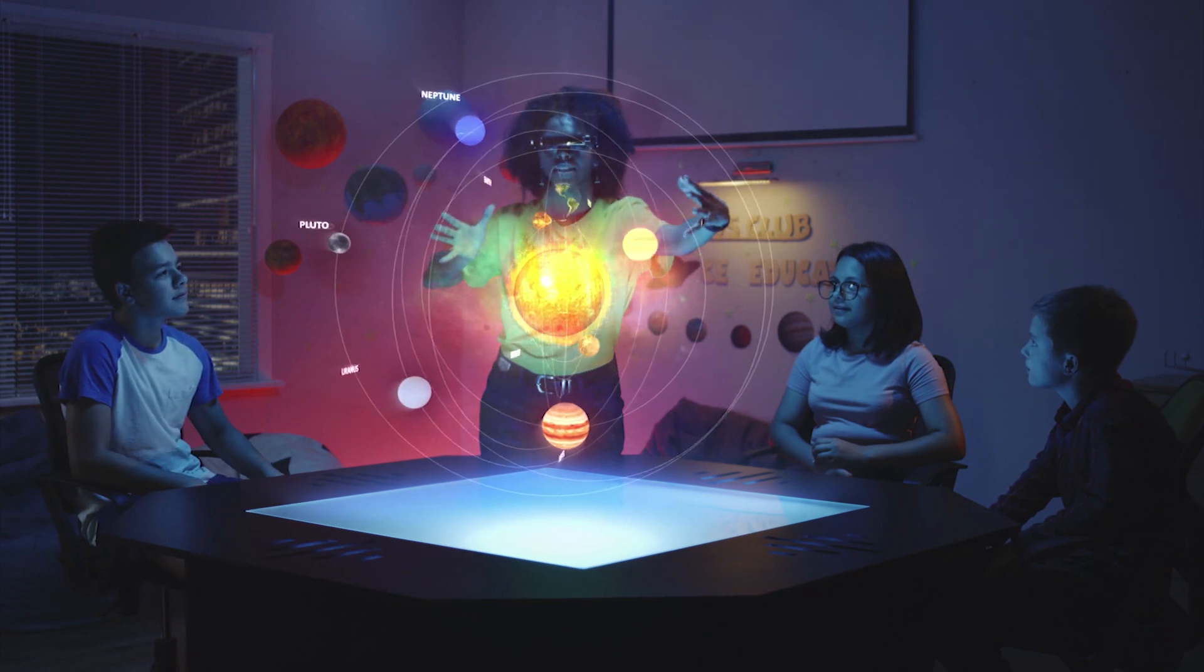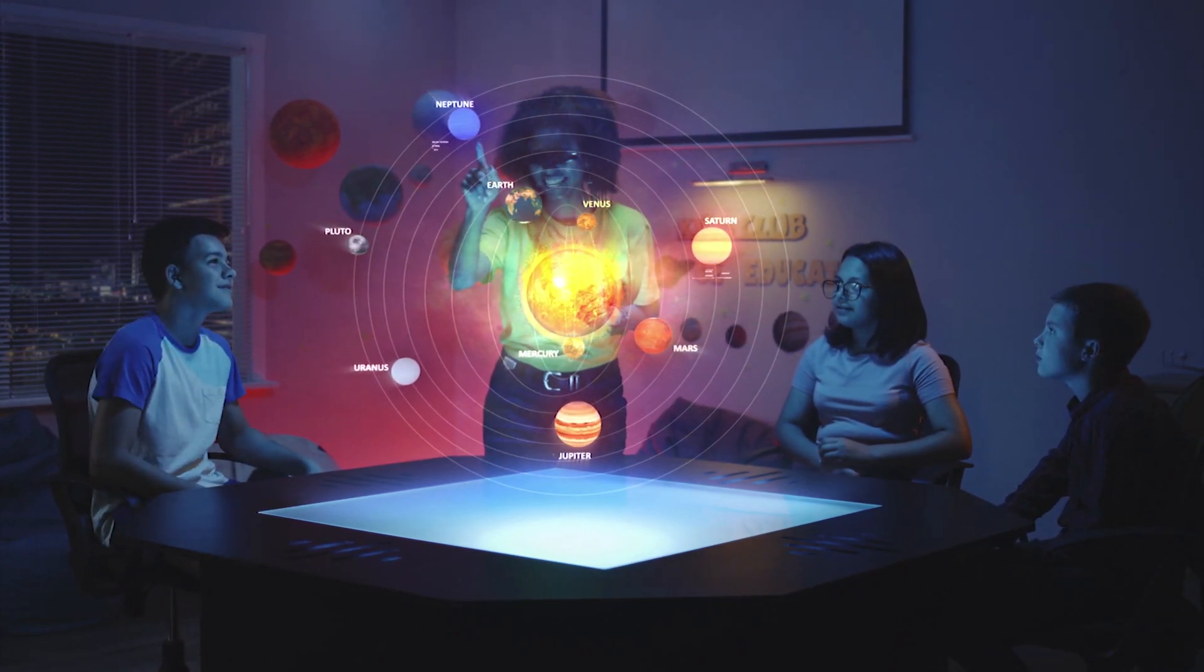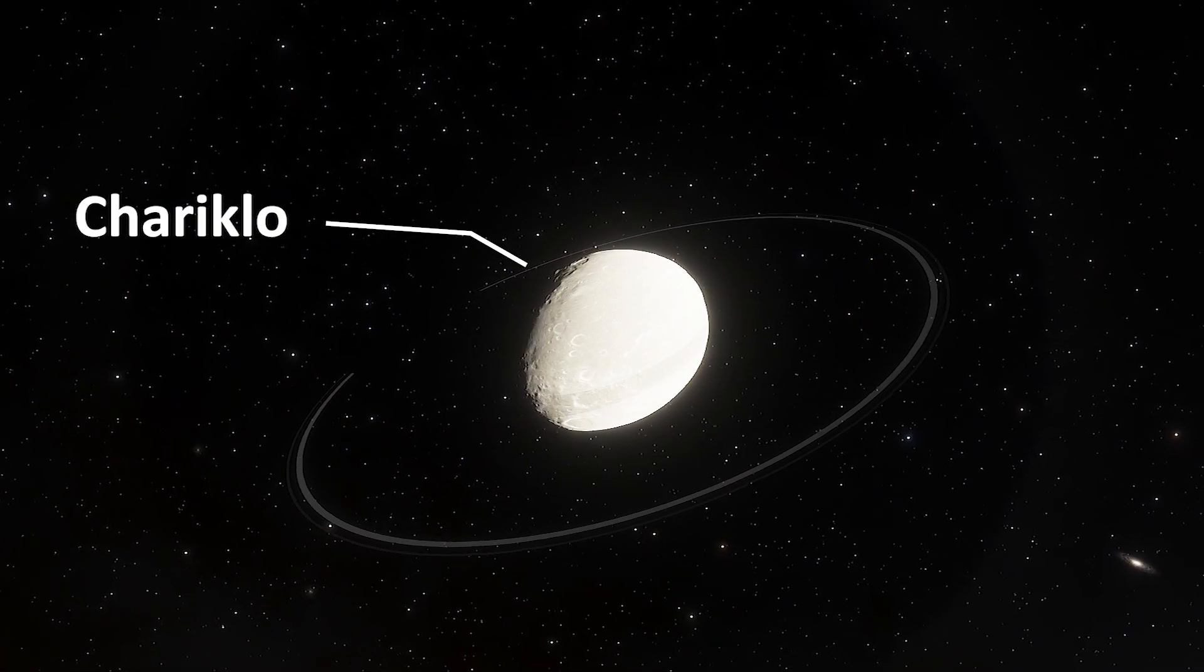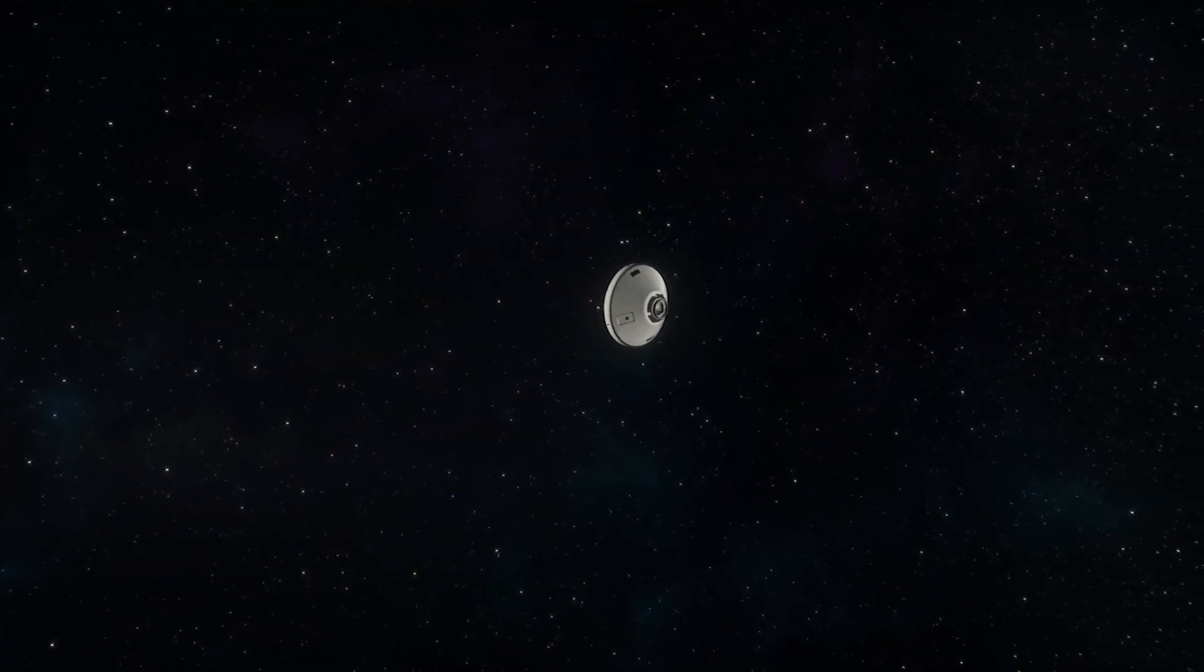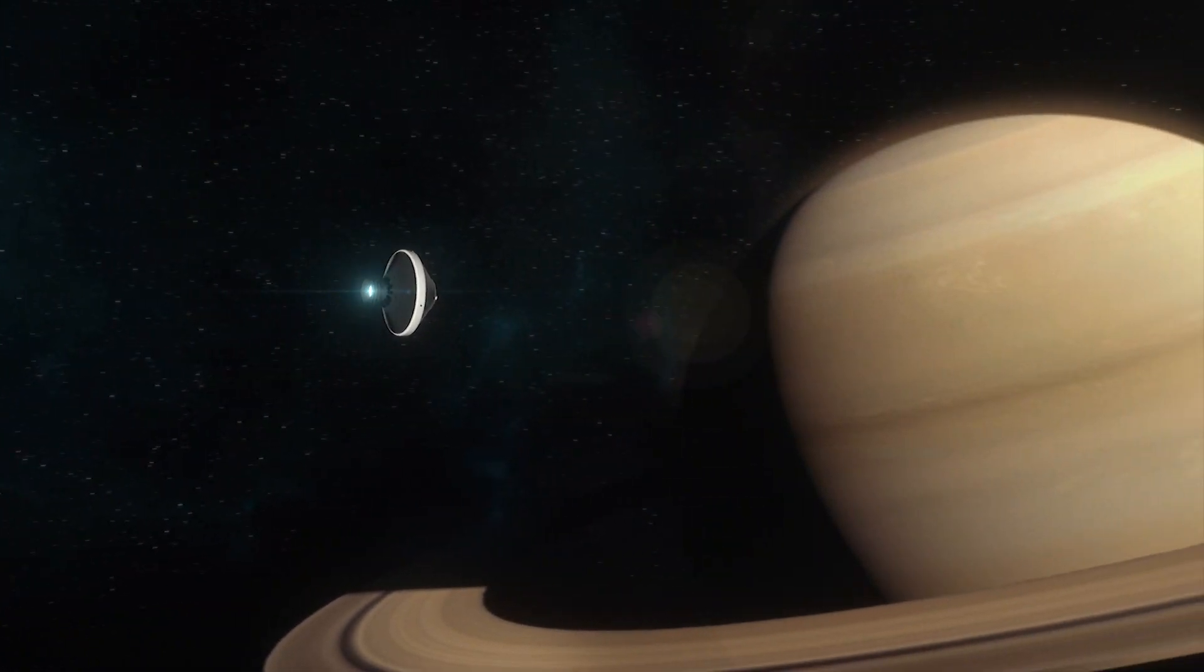Half of the planets in our solar system have rings and years ago astronomers even discovered a distant asteroid with rings for the first time. Still much remains to be studied about the relationship between moons and rings.